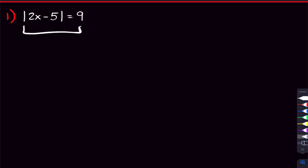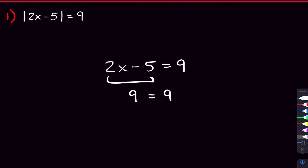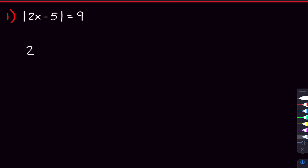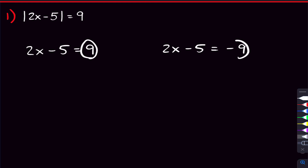Starting with the first equation: how is this different from the same equation without the absolute value — just 2x minus 5 equals 9? In that equation, our goal is to find x that makes 2x minus 5 equal 9. That's the same thing we want here. It's just that there are now two ways it can happen: 2x minus 5 could equal 9, or 2x minus 5 could equal negative 9. Because the thing inside the absolute value could be either 9 or negative 9, and taking the absolute value of either gives you 9.